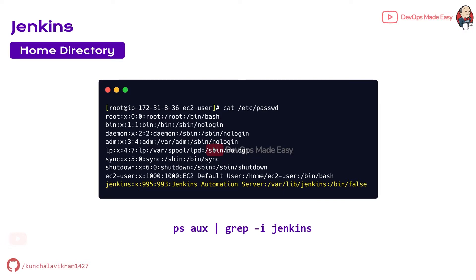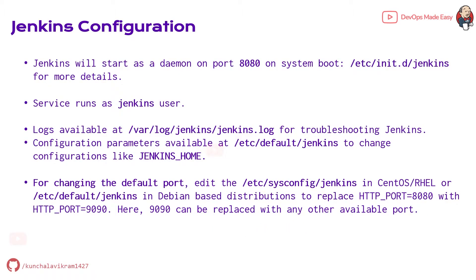If you want to see the Jenkins user information, by default the Jenkins installation creates a Jenkins user with the home directory at /var/lib/jenkins. This can be seen using the /etc/passwd file by running 'cat' on it. If you want to change the default configuration, such as the port on which Jenkins runs — basically 8080 by default — you can change it to a different port. You can also change the Jenkins home directory. Depending on whether you're using Red Hat Enterprise Linux or Debian distributions, the Jenkins configuration file location changes. For CentOS or RHEL it will be in /etc/sysconfig/jenkins, but for Debian distributions it will be /etc/default/jenkins.